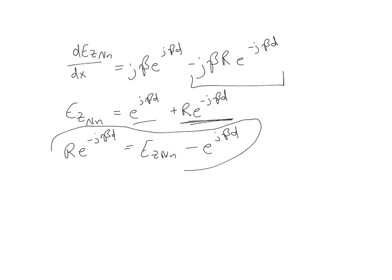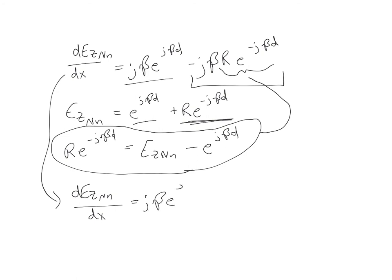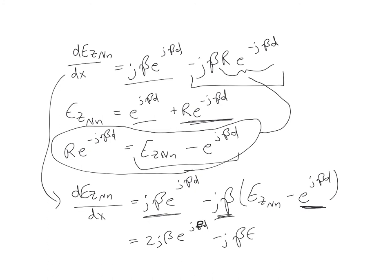So now I can take this and plug it in here, not for the whole thing, but for this right here. So we're still going to have a j beta out in front. So now for this, we'll have dez nn dx is equal to j beta e to the j beta d minus the j beta out in front. And now I'm going to plug this in. We'll have ez nn minus e to the j beta d. And simplifying this expression, we can combine the first and the last term after multiplying by jb. We're going to get 2j beta e to the j beta d minus j beta ez nn.